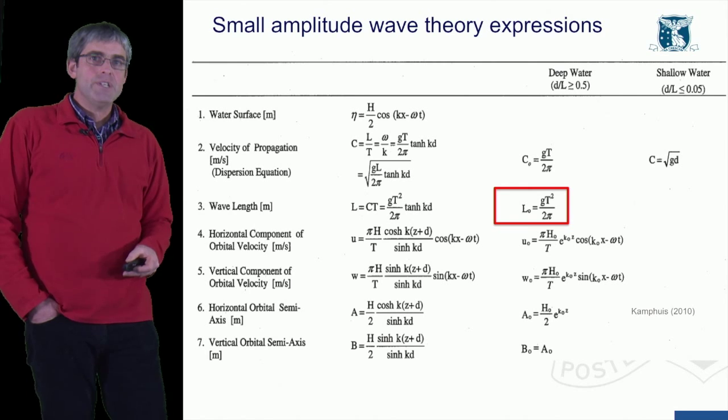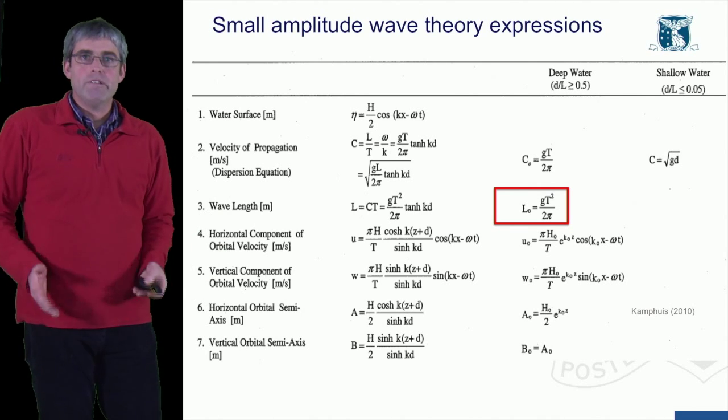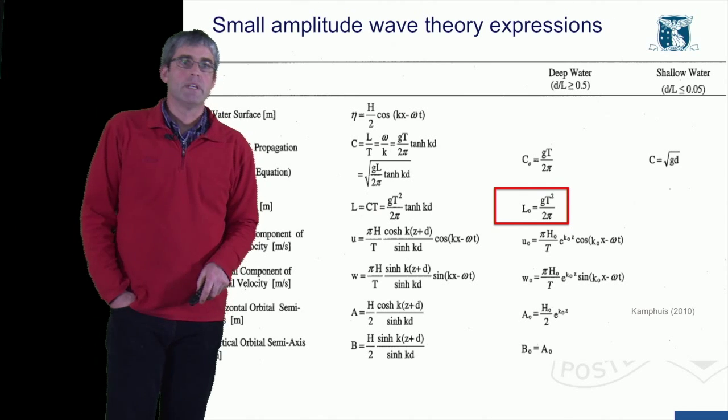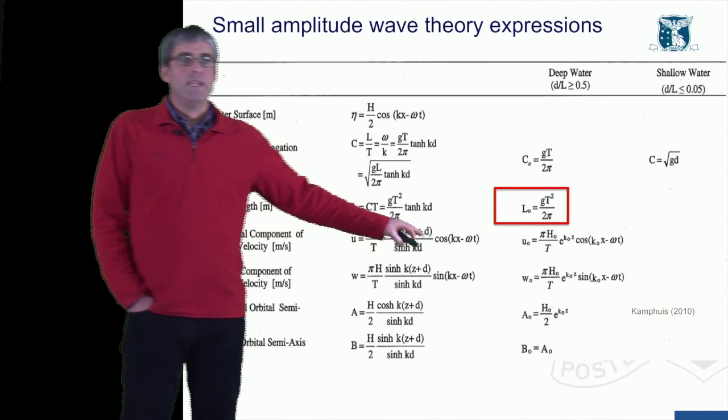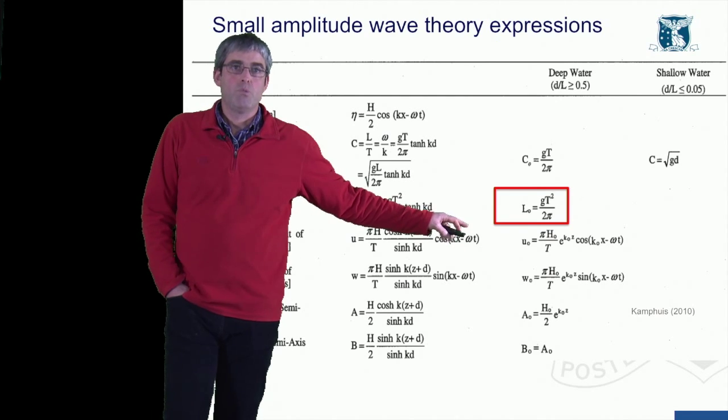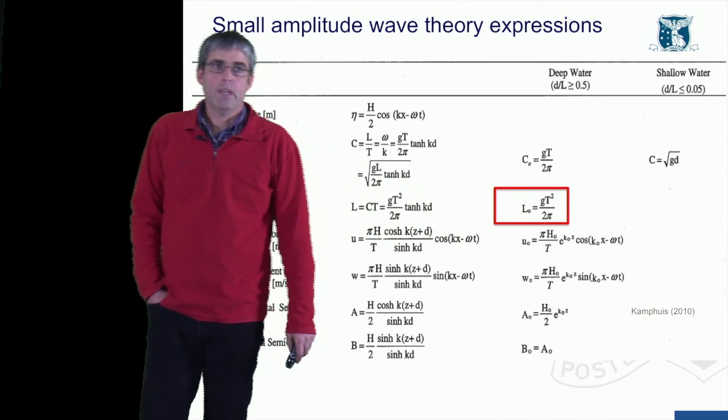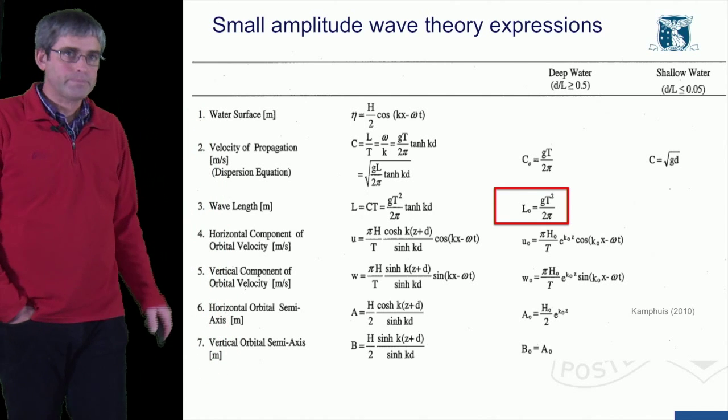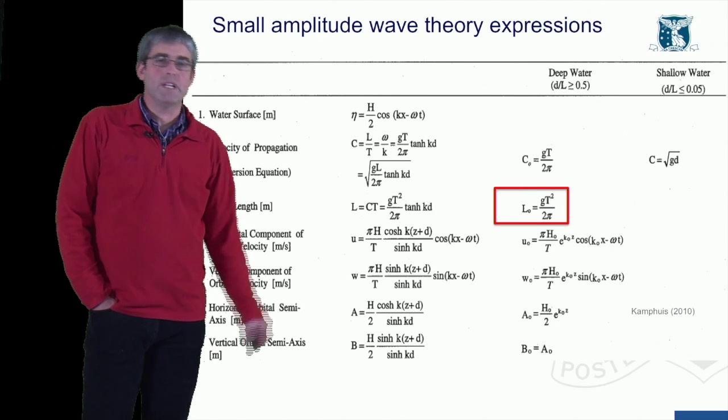The procedure we use is for a given wave period, the period tends to be a constant for a given set of waves. We calculate the deep water wavelength. So if those waves were in deep water, that's what the wavelength would be, L0. And we can calculate that using gravitational acceleration times the period squared divided by 2π.